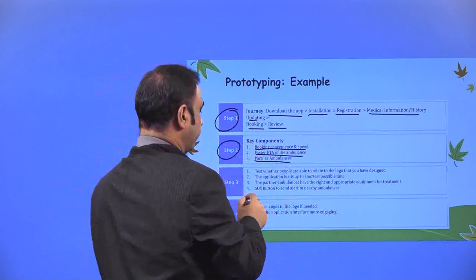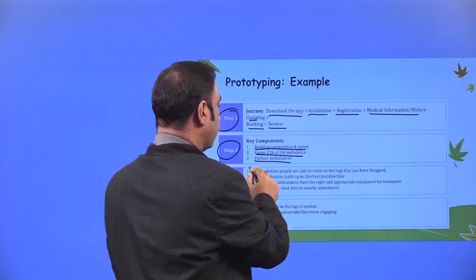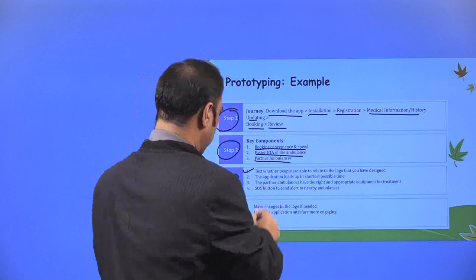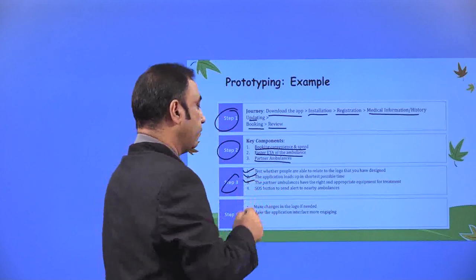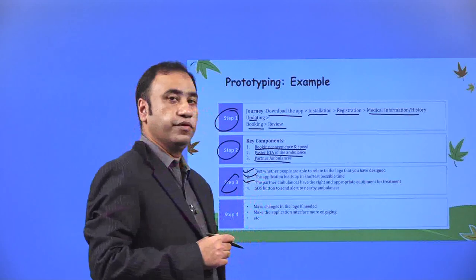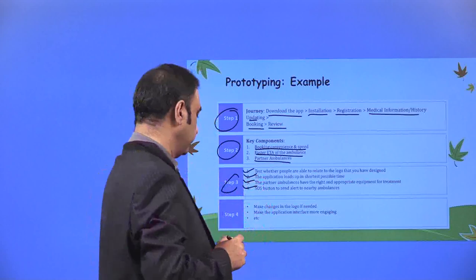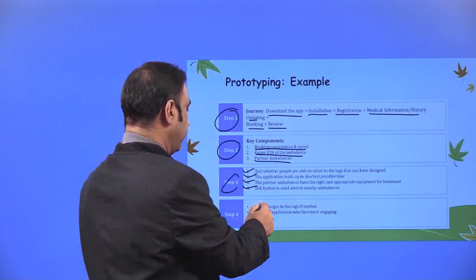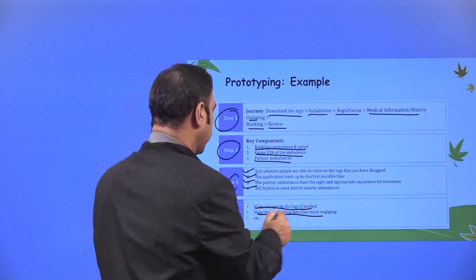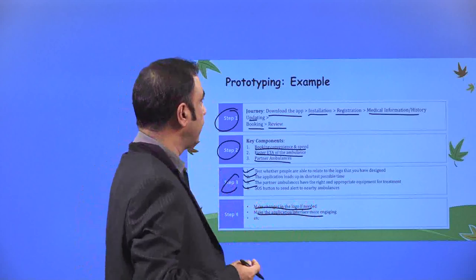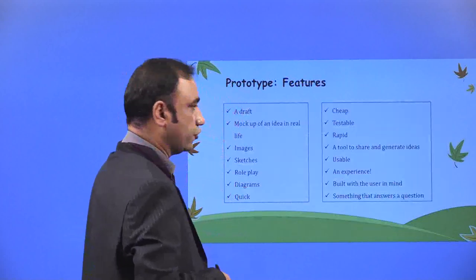Step 3: test whether people are able to relate to the logo you have designed; test that the application loads up in the shortest possible time; test that the partner ambulances have the right and appropriate equipment for treatment; and test the SOS button to send alert to nearby ambulances. Step 4: make changes in the logo if needed after user feedback, and make the application interface more engaging. This is how you create prototyping — these are the steps to go through during the process.